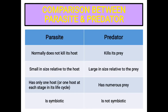Predation and parasitism are conceptually similar in that both the parasite and the predator live at the expense of the host or prey, but there are a few differences between them. Parasites normally do not kill their host; they are small in size relative to their host; parasites have only one host or one host at each stage in their life cycle; and parasites are symbiotic in nature. Predators kill their prey; they are large in size relative to their prey; they have numerous prey; and they are not symbiotic.